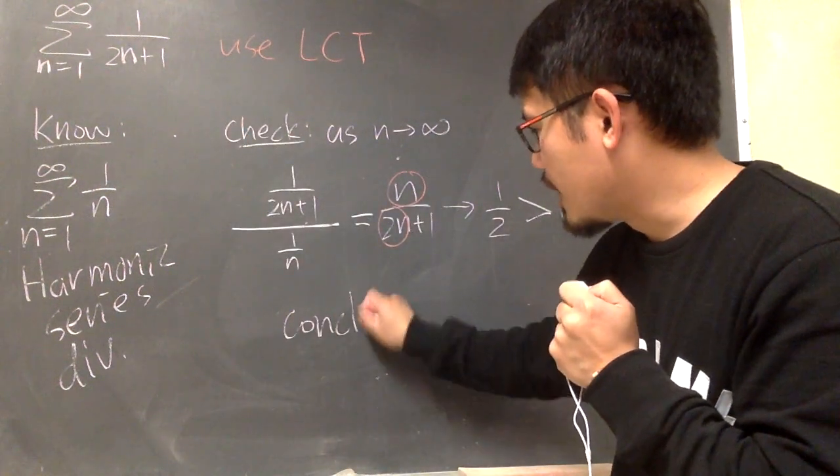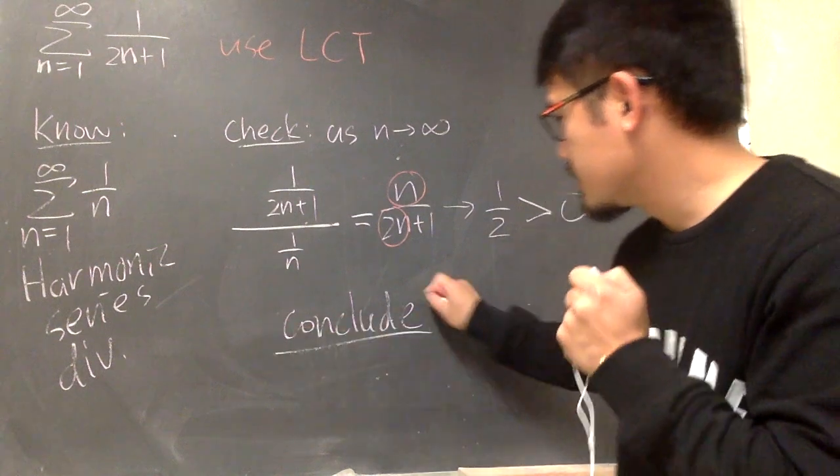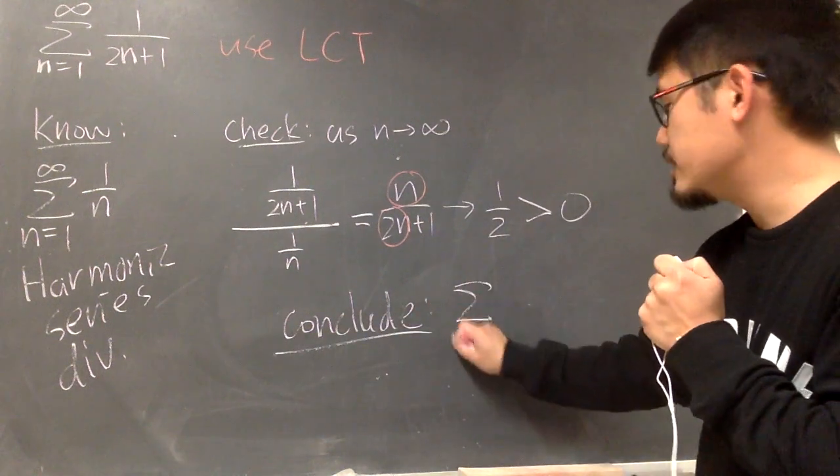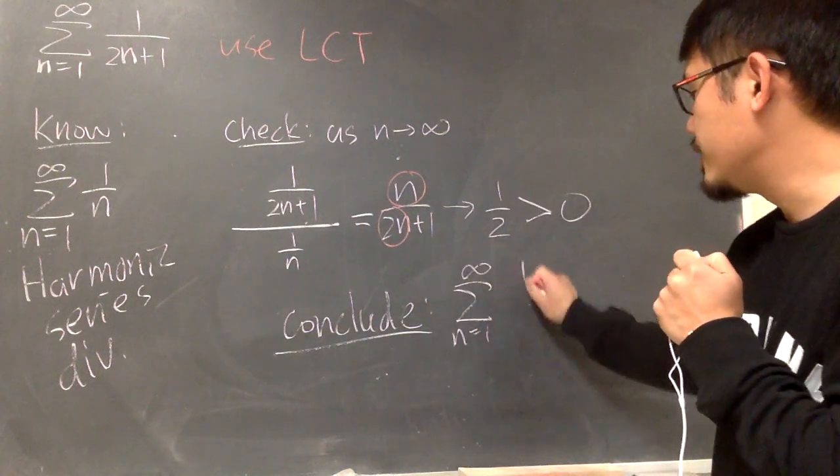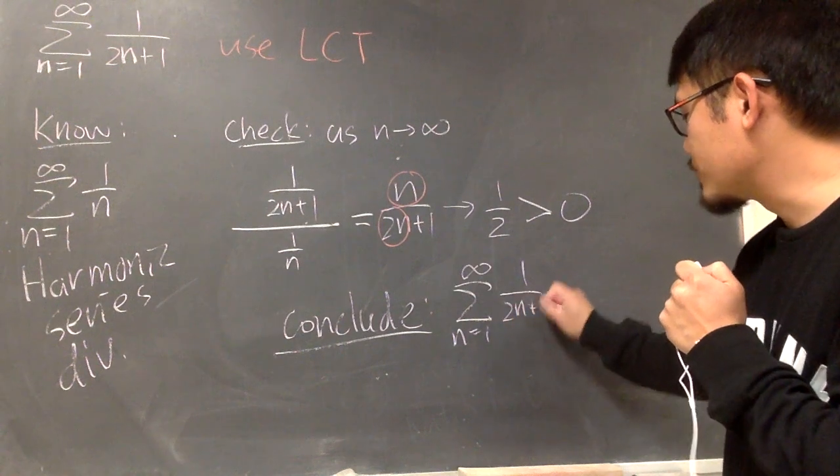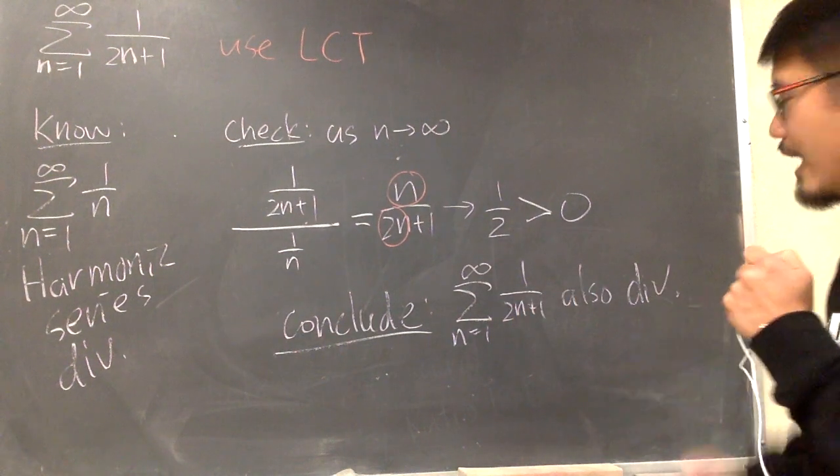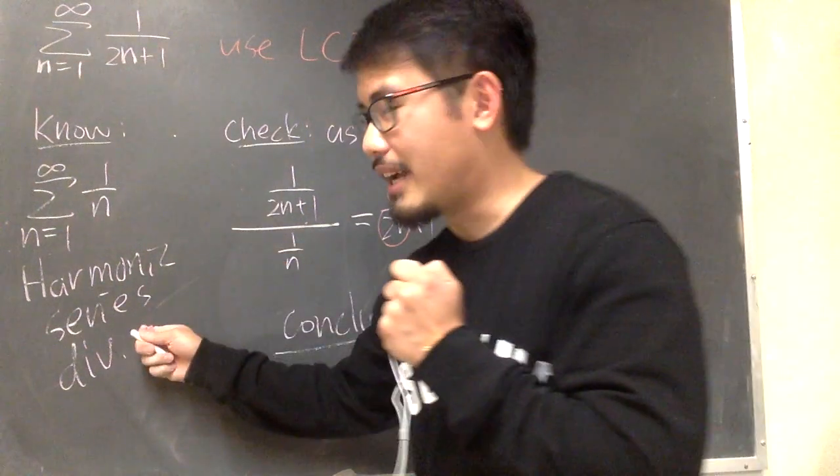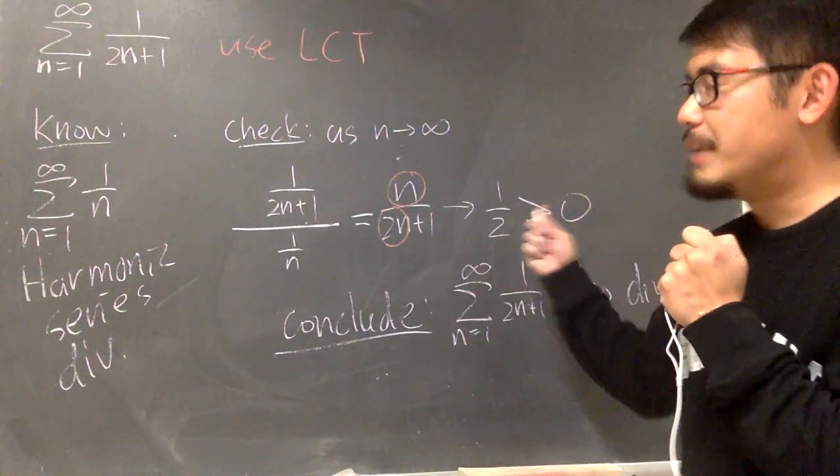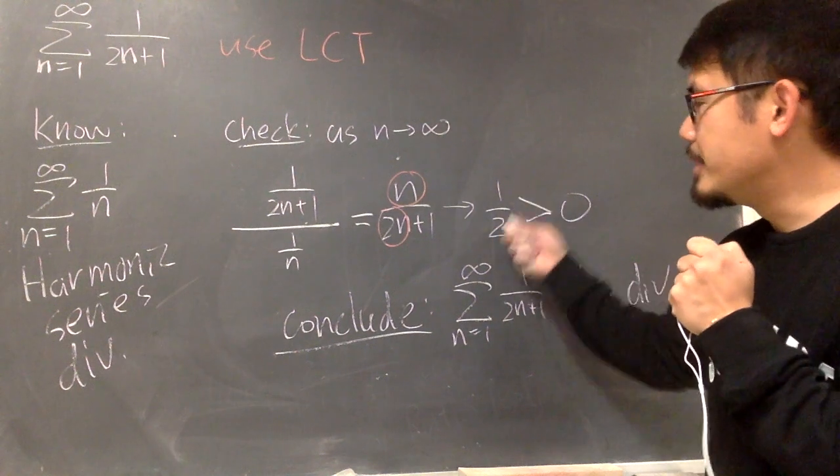At the end, we can conclude: the original series, sigma as n goes from 1 to infinity, 1 over 2n plus 1, is also divergent. Because this diverges. And then, the limit comparison test says, this limit that we got,